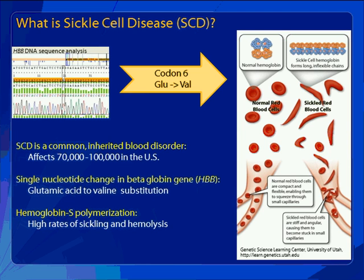I know this crowd is all familiar with sickle cell disease, but I just wanted to remind us all of a couple of key features that are relevant to what we're going to be talking about today. Sickle cell disease is a common inherited blood disorder affecting as many as 100,000 people in the U.S. alone. This is only a small fraction of the burden of this disease itself worldwide, particularly in areas where malaria is endemic. It is an inherited blood disorder. We know the gene, and in fact, we know the specific mutation which causes sickle cell disease.